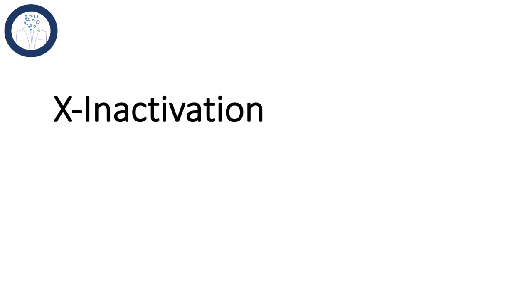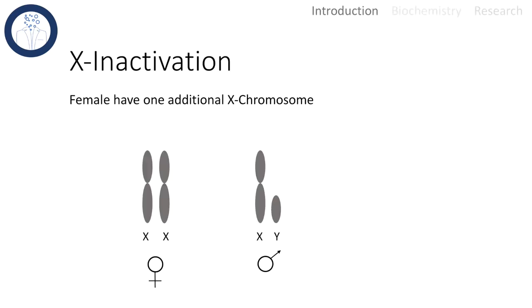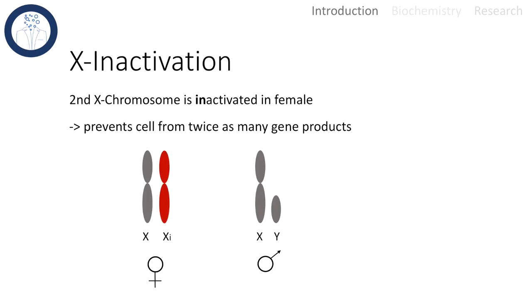Hello and welcome to today's talk about X inactivation. Females have one additional X chromosome whereas males only have one. The phenomenon of X inactivation in female somatic cells has a function: it prevents the cell from getting twice as many gene products as a male cell.